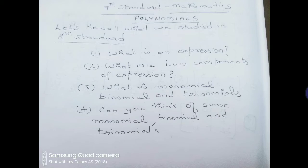Variable means the value will change. Constant means — for example 5 — always it is 5. In any problem, 5 will be 5. But x can be different values: in one problem it may be 3, it may be 7, or it may be −2. So the two components of an expression are constant and variable.